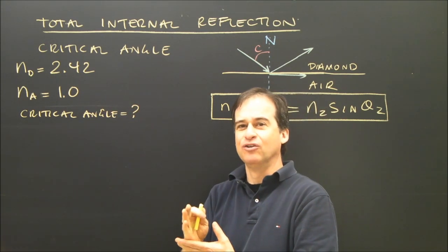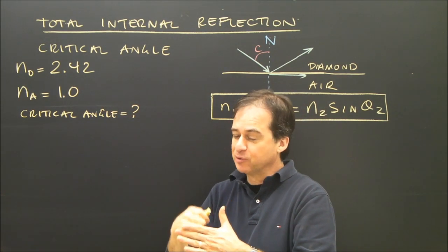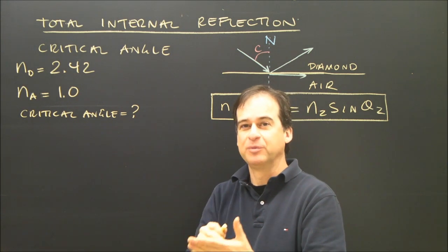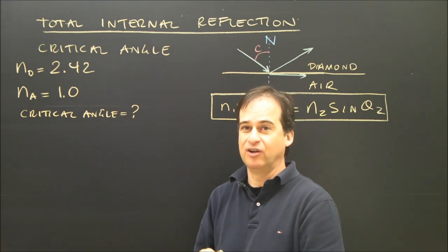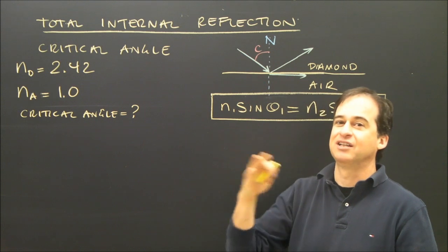And I want to know what is that angle that the light will no longer be able to go from the diamond into the air, but it will be trapped inside the diamond and reflect off it at the same angle of incidence as the angle of reflection.